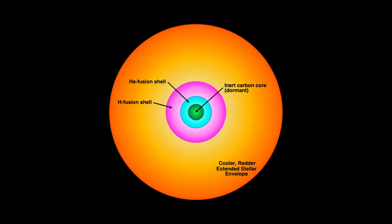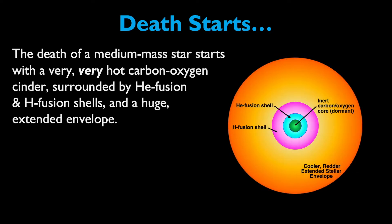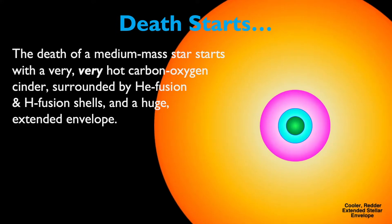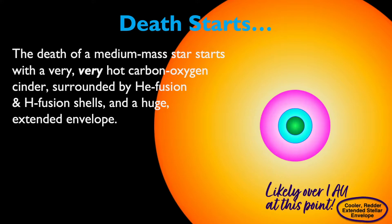But now comes the time for these stars to begin bowing out. The death of a medium-mass star starts with a very hot carbon-oxygen cinder in the core, surrounded by individual shells of helium and hydrogen fusion going outwards from the core. And finally, an extended envelope of hydrogen. At this point, the extended envelope is likely over one astronomical unit in radius. In other words, it's huge. If this was our sun, it would have engulfed the Earth by now.